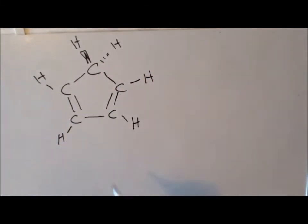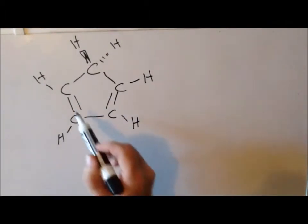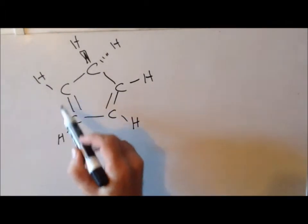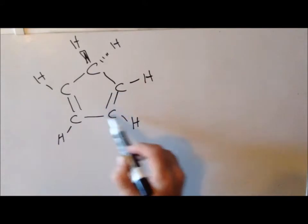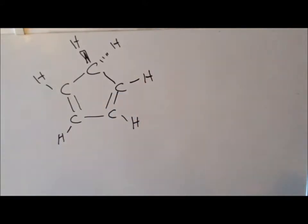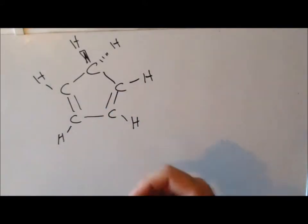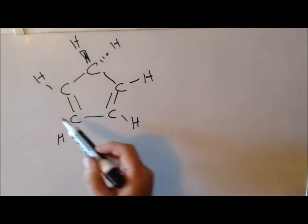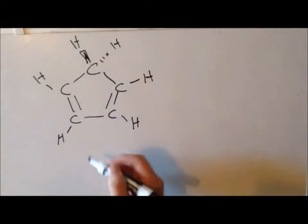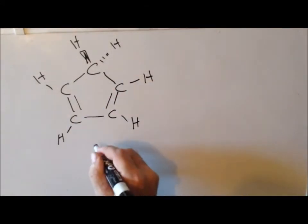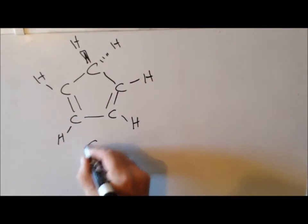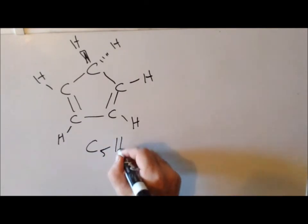We have the five-member ring, which makes it a pentane of some sort. Since it has two double bonds, it makes it a diene, so that gives us cyclopentadiene. It has the chemical formula C5H6.